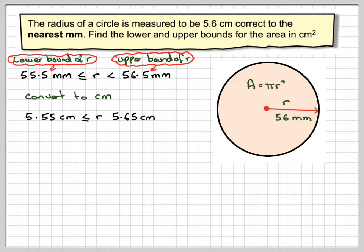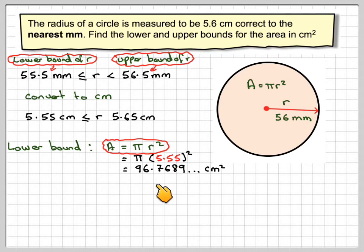Now the area of a circle is π r squared. So the lower bound will be the area is equal to π r squared, which is going to be π times 5.55 squared. That's the lower bound for the length. And if we work that on our calculator, we're going to get 96.7689 centimeters squared. Now normally we would round this off correct to three significant figures, so that would be 96.8 centimeters squared.